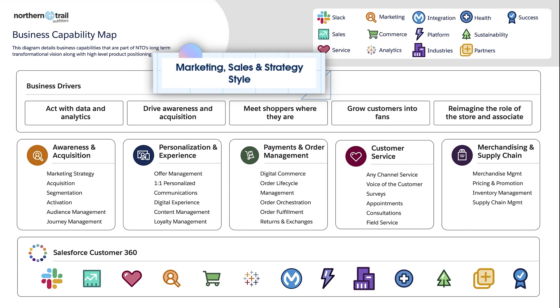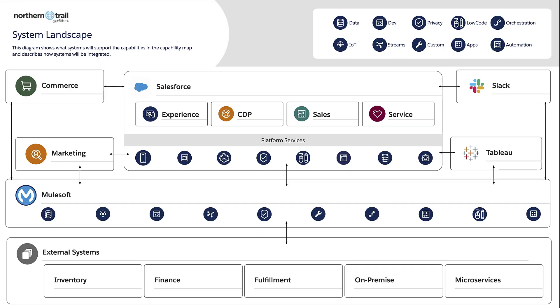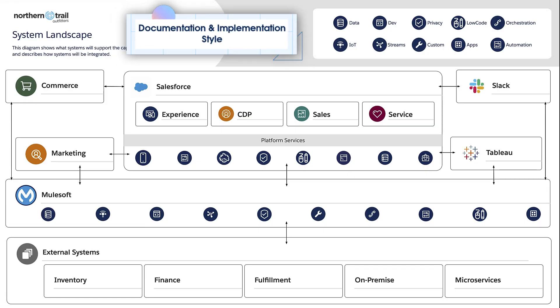The second type of diagram is documentation and implementation, and this style helps viewers understand the technical implementation for a solution. An example of this type of diagram is a system landscape.